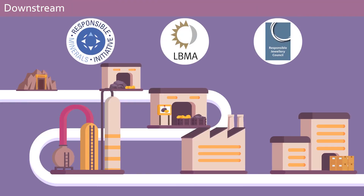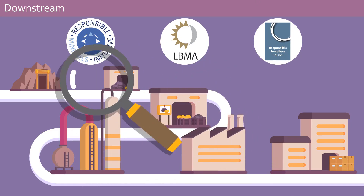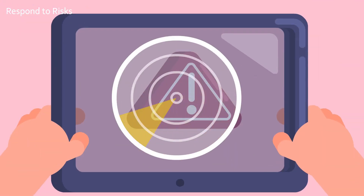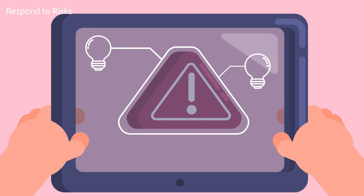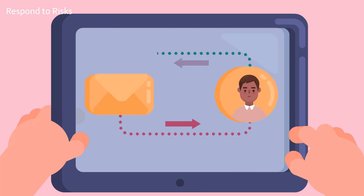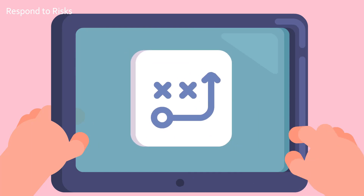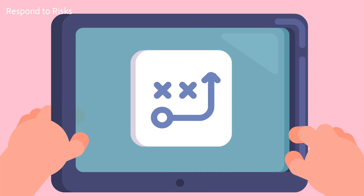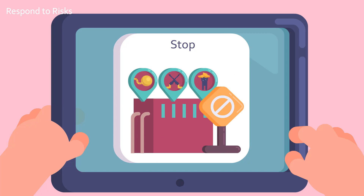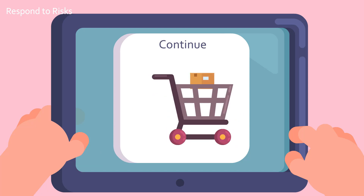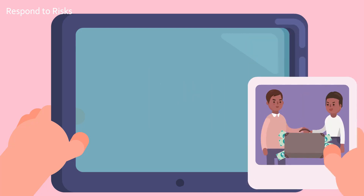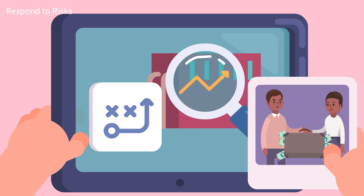There are smelter and refiner audit programs to support due diligence efforts of downstream companies. When you identify risks, design and implement a strategy to respond to them by working with your supply chain. First, report the assessment findings to senior management so they can decide how to respond. Then design and implement a risk management plan for the risks you identified. Stop engagement with suppliers committing serious abuses, like forced labor or supporting non-state armed groups. For all other risks, continue sourcing but mitigate the risks. For example, if you find a case of bribery, develop a plan to improve and track performance of suppliers while continuing engagement.